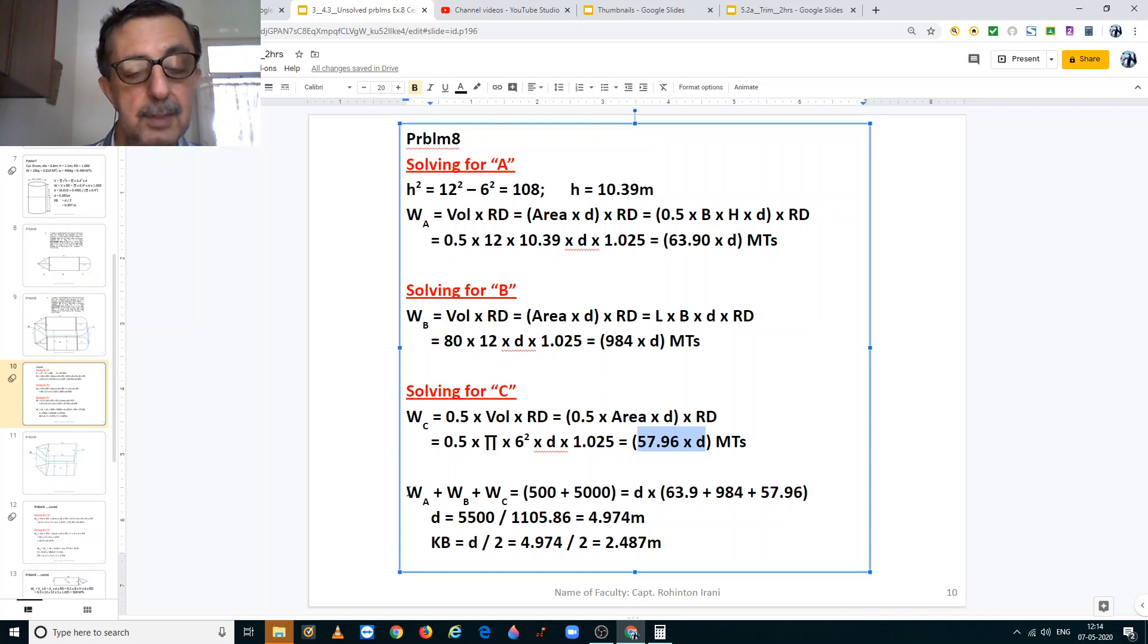Now we know from the data that was given in the problem that the displacement, total displacement is 500 plus 5000 tons of cargo that is in it, that is 5500 tons. And this is equal to the displacement that we have calculated section-wise of A, B and C. The draft being the common factor, we have taken that out from the bracket and we are adding 63.9 plus 984 plus 57.96. That gives us draft is equal to 5500 divided by 1105.86. This is equal to 1105.86. Thus we see that the draft works out to 4.974 meters.